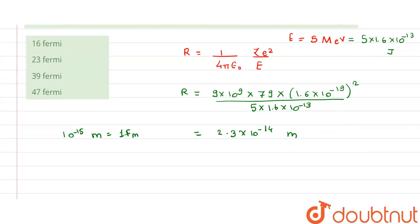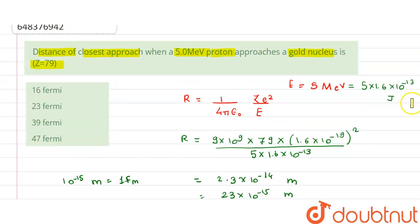That is why, this will be equal to 23 × 10⁻¹⁵ meters, that means 23 fermi. The distance of closest approach is equal to 23 fermi. So option 2 is the right answer.